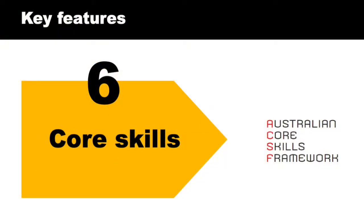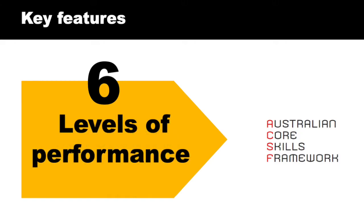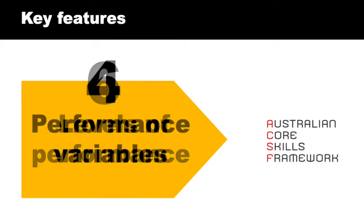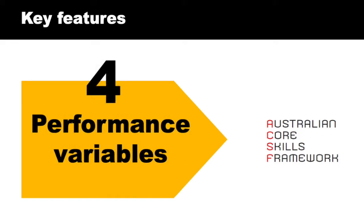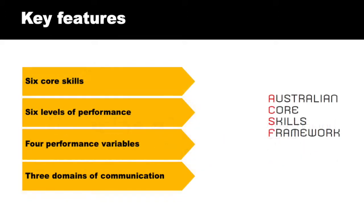There are six core skills, six levels of performance, four performance variables, and three domains of communication. We'll go through each of these separately to develop an understanding of the core features.